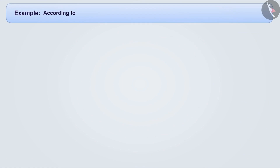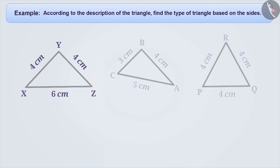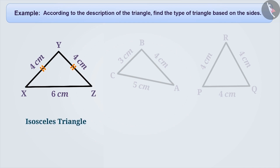According to the description of the triangle, find the type of triangle based on the sides. From the description provided for triangle XYZ, we understand that the length of side XY and side YZ are equal, but the length of the third side XZ is different. Therefore, we will call this triangle an isosceles triangle.